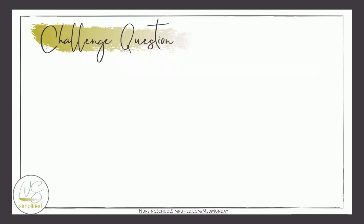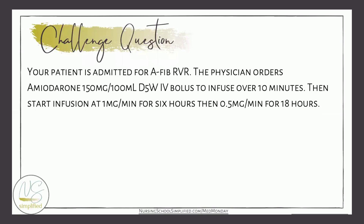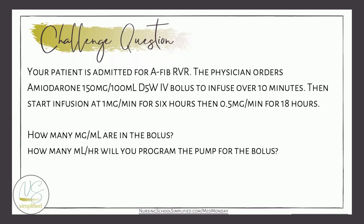Our challenge question this week — this is a hard one. Your patient is admitted for AFib RVR, and the physician orders amiodarone 150 milligrams in 100 mLs of D5W IV bolus to infuse over 10 minutes, then start the infusion at 1 milligram per minute for 6 hours, then decrease to 0.5 milligrams per minute for 18 hours. How many milligrams per mL are in the bolus, and how many mLs per hour will you program the pump for the bolus? Leave your answers in the comments on our Facebook page to be entered to win a $25 Amazon gift card.